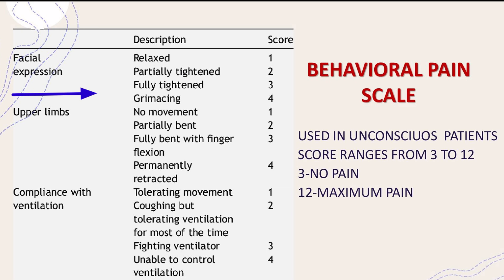In facial expression: a relaxed face scores 1, partially tightened is 2, fully tightened is 3, and grimacing is 4. For upper limb movements: no movement scores 1, partially bent is 2, fully bent with finger flexion is 3, and permanently retracted is 4.